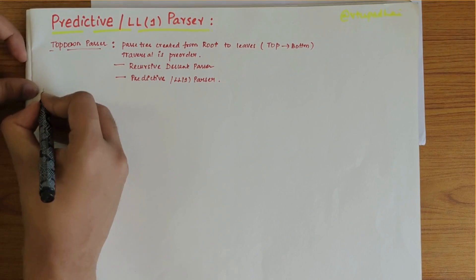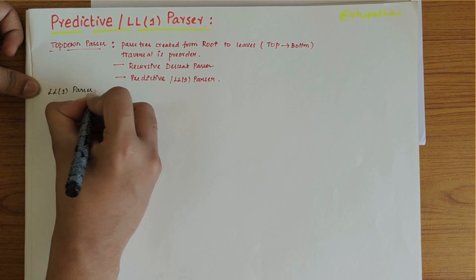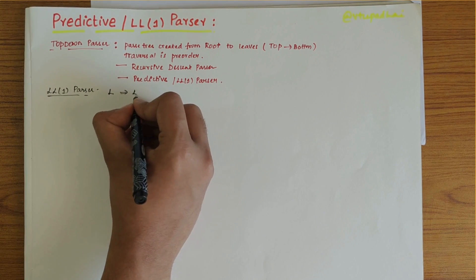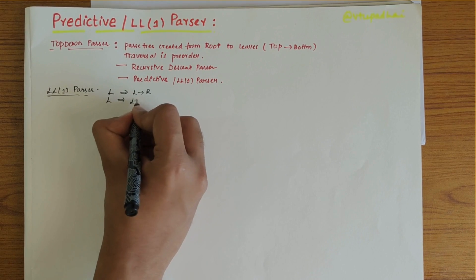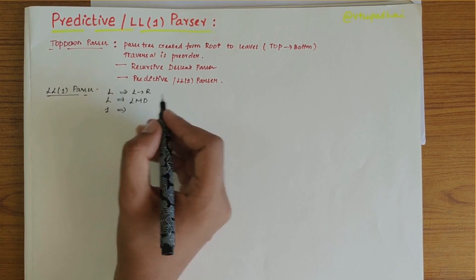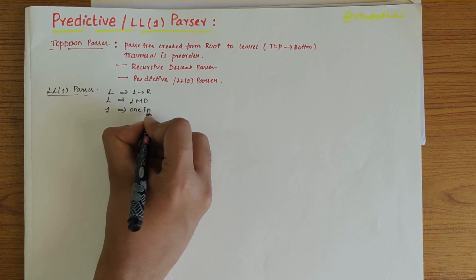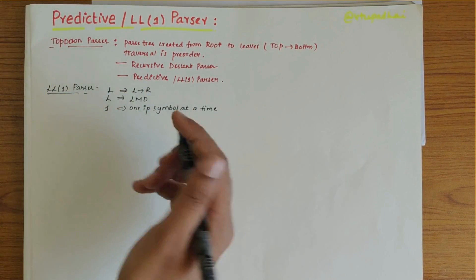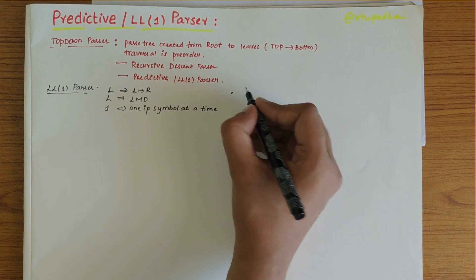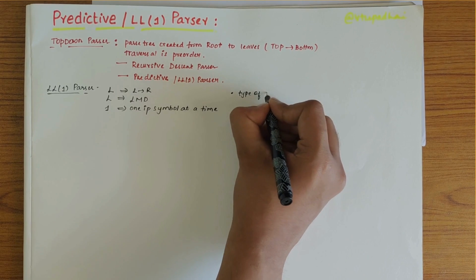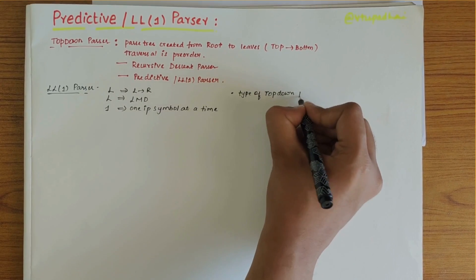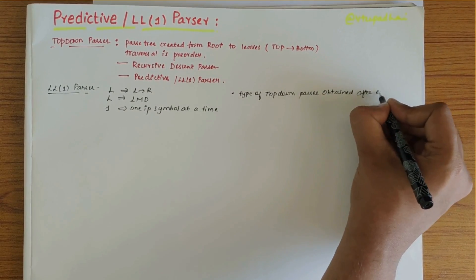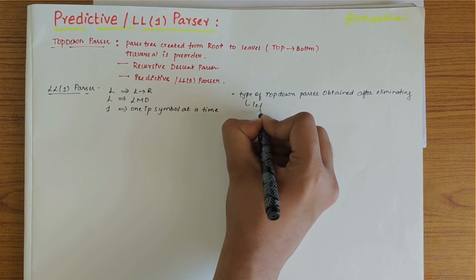In this video we'll be dealing with the LL1 parser. The first L stands for scanning the input from left to right, the second L stands for leftmost derivation, and the one stands for the constraint that is one input symbol at a time. The LL1 parser, or predictive parser, is a type of top-down parser obtained after eliminating left recursion and left factoring from the given grammar.